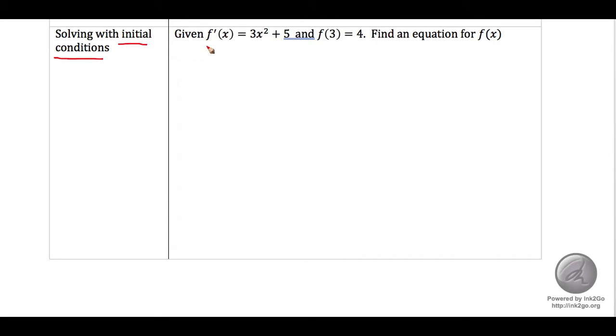Given that the derivative of some function is equal to 3x squared plus 5, and that f of 3 is equal to 4, find an equation for f of x.